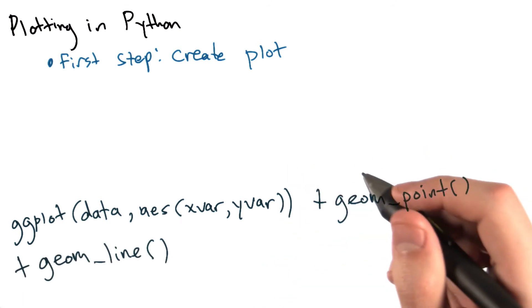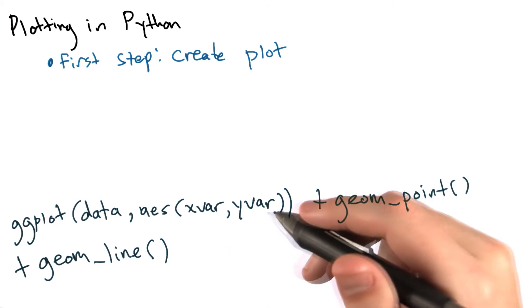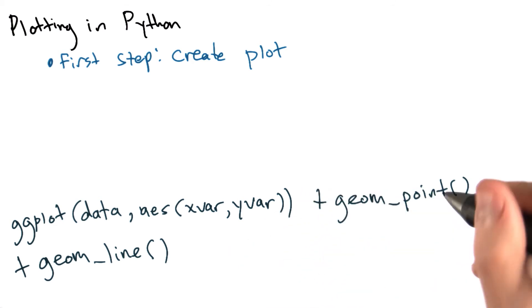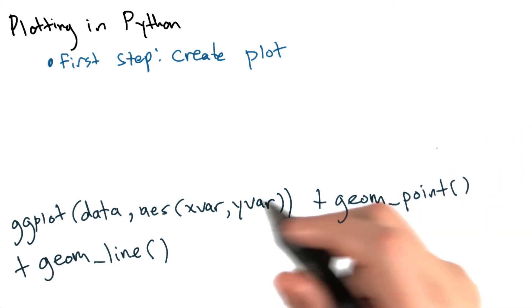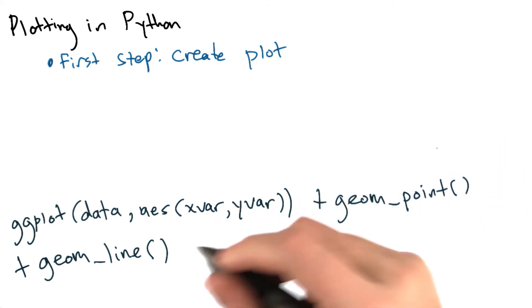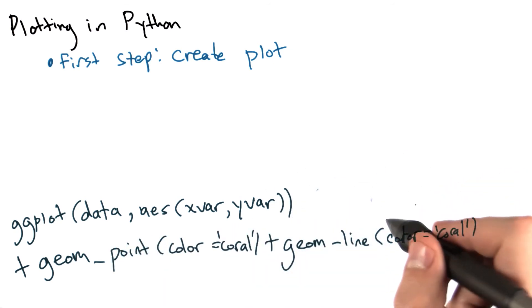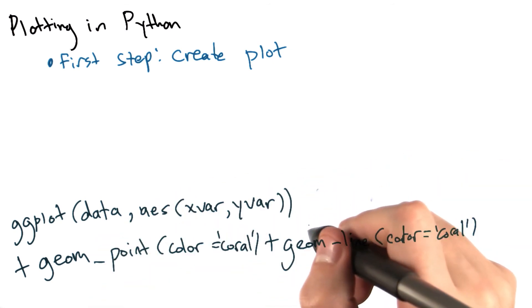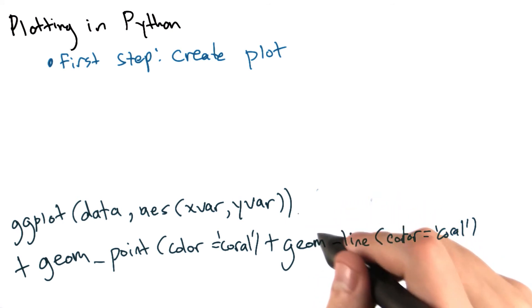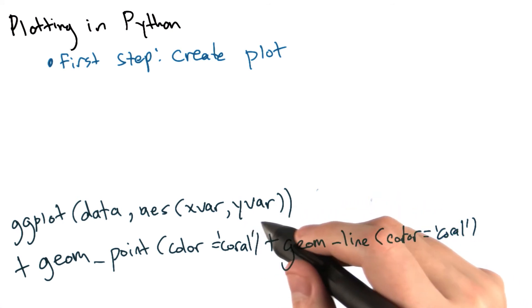Now, say that we wanted these points to have a particular color. We can pass color equals coral into geom_point, and also pass color equals coral into geom_line. And after we do that, both the points and the lines will have the color coral. This is the second step of making a plot in ggplot. That is choosing which type of geometric objects will represent the data.